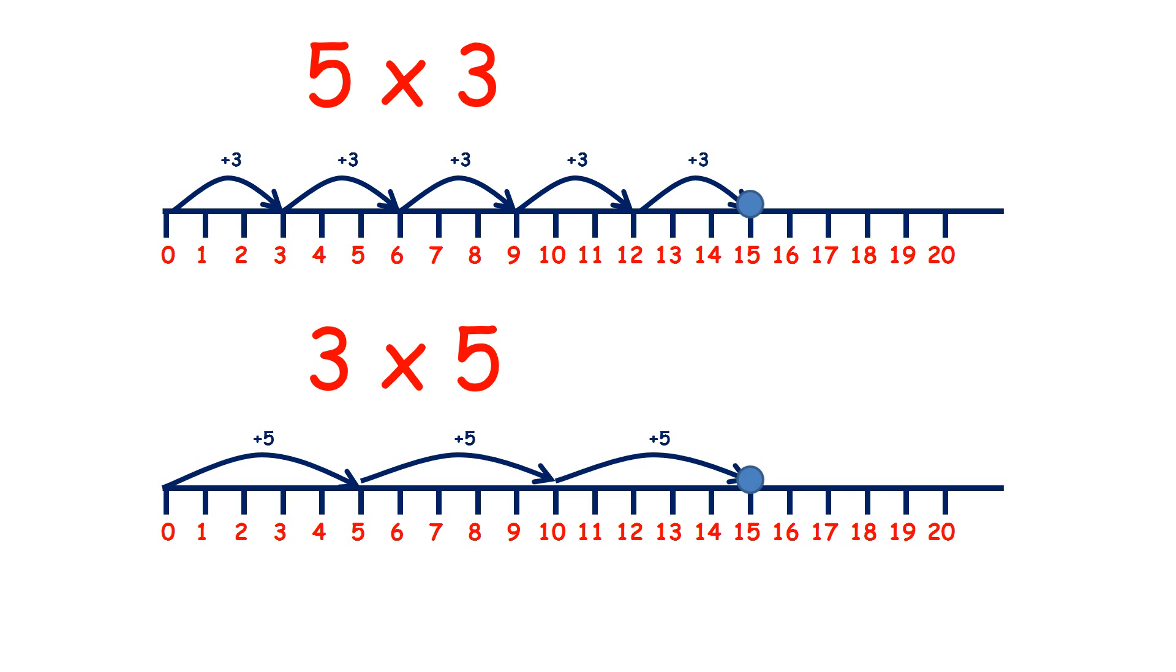So whether we do 5 times 3 or 3 times 5, we get to 15. And this is sometimes called the commutative property of multiplication. Order doesn't matter. Whichever way you multiply the numbers, you'll get the same answer.